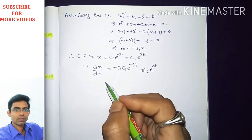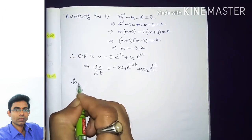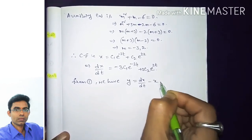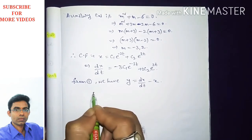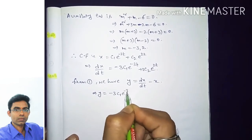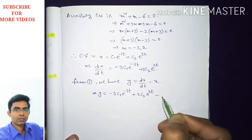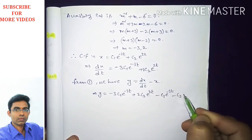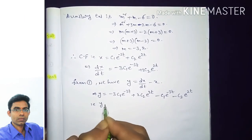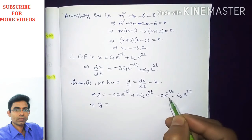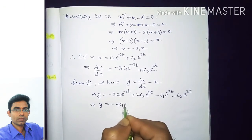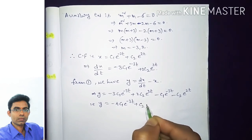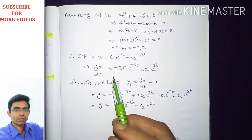From equation 1, y = dx/dt − x. Substituting: y = (−3c1·e^(−3t) + 2c2·e^(2t)) − (c1·e^(−3t) + c2·e^(2t)). Simplifying: the e^(−3t) terms give −4c1·e^(−3t) and the e^(2t) terms give c2·e^(2t).